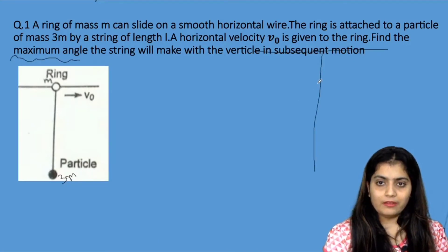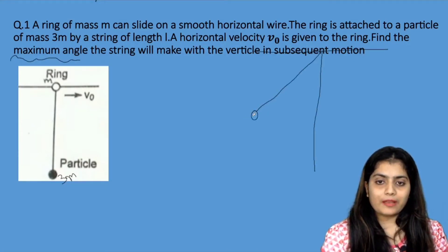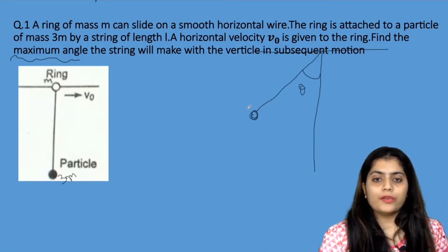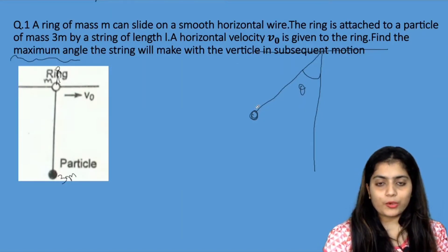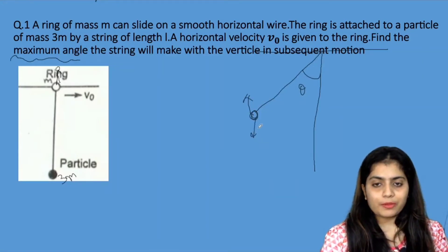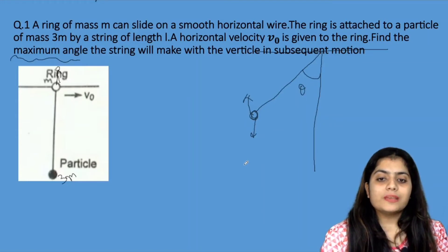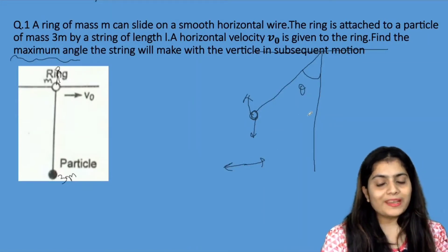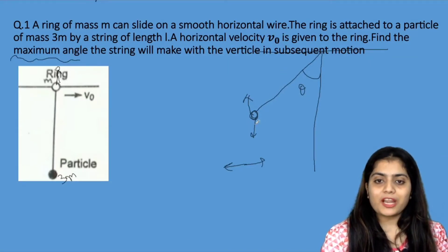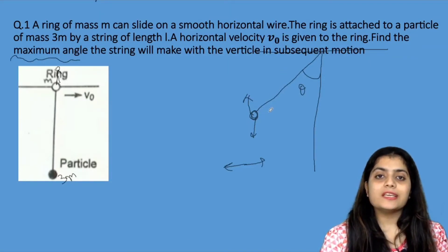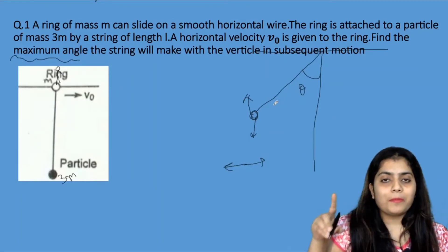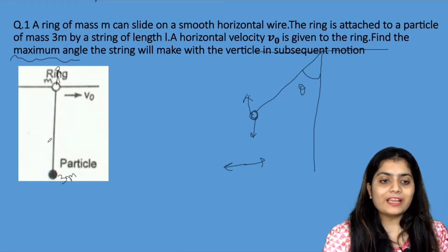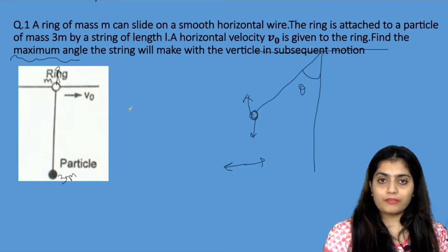Suppose this is our string and this is our wire. When will the maximum angle theta be made? If we place an observer on the ring, then when the velocity of the particle in the ring's reference frame is zero, theta will be maximum. So when theta is maximum, the velocity of the particle relative to the ring will be zero, meaning the velocity of both are the same.